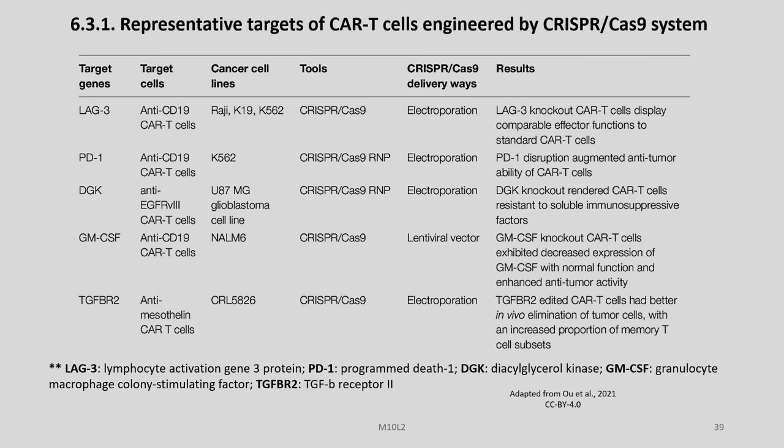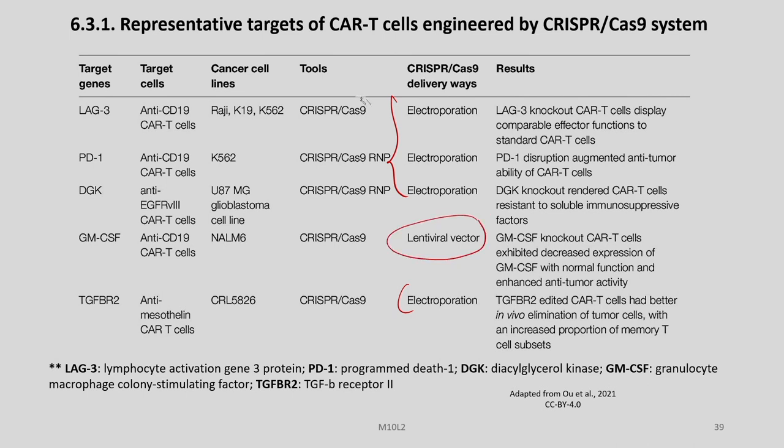The cancer cell lines corresponding to each target gene are: RAJI for LAG-3, K562 for PD-1, U87MG glioblastoma cell line for DGK, NALM6 for GM-CSF, and CRL5826 for TGF-betaR2. In all these cases, CRISPR-Cas9 is mostly used, and for PD-1 and DGK, CRISPR-Cas9 RNP has been deployed. Electroporation is the predominant delivery method, except in the case of GM-CSF where lentiviral vectors have been used.